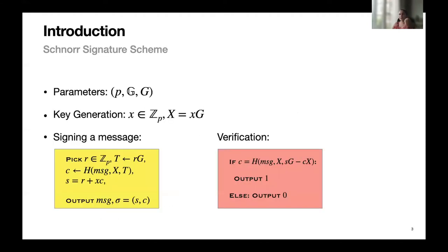Our scheme is based on the Schnorr signature scheme, so I would like to remind you how it works. It works on a group of order P with generator G. The secret key is an element from Z_P, and the public key is X multiplied by G.